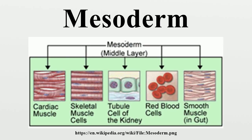The lateral plate mesoderm splits into parietal and visceral layers. The formation of these layers starts with the appearance of intercellular cavities. The somatic layer depends on a continuous layer with mesoderm that covers the amnion, while the splanchnic layer depends on a continuous layer that covers the yolk sac. The two layers cover the intraembryonic cavity. The parietal layer together with overlying ectoderm forms the lateral body wall folds, and the visceral layer forms the walls of the gut tube. Mesoderm cells of the parietal layer form the mesothelial membranes, or serous membranes, which line the peritoneal, pleural, and pericardial cavities.